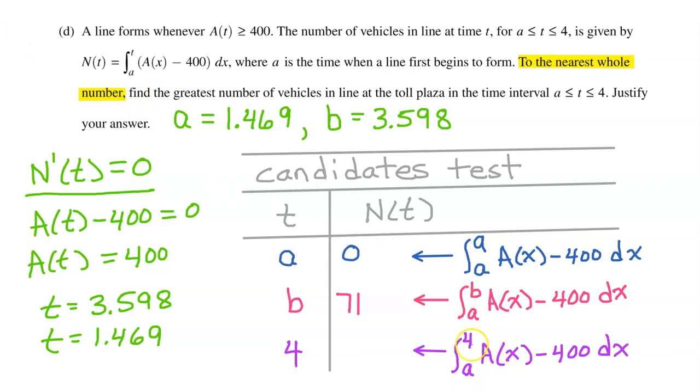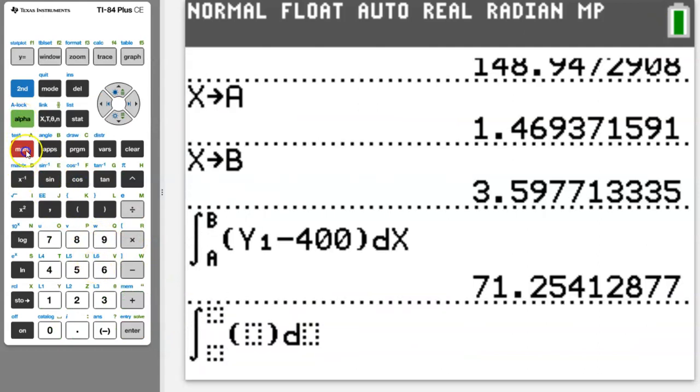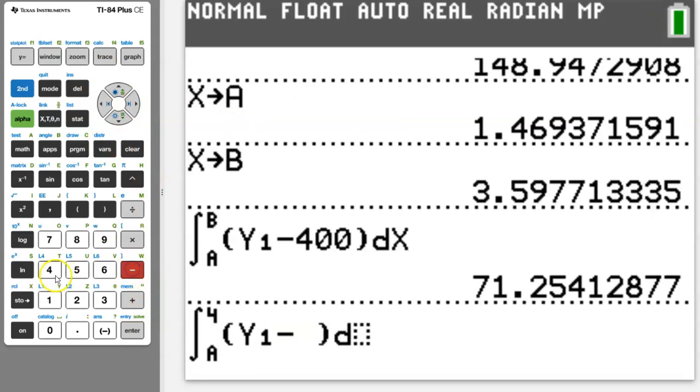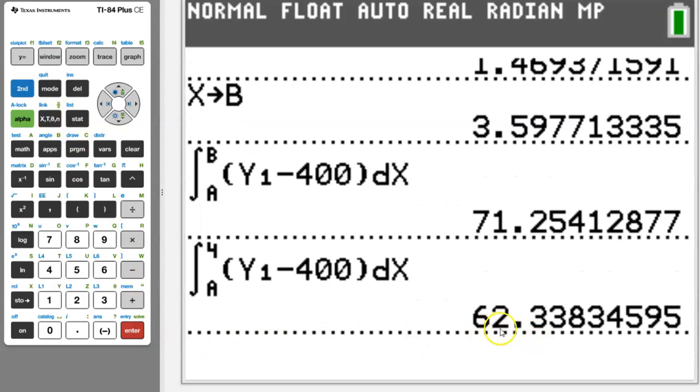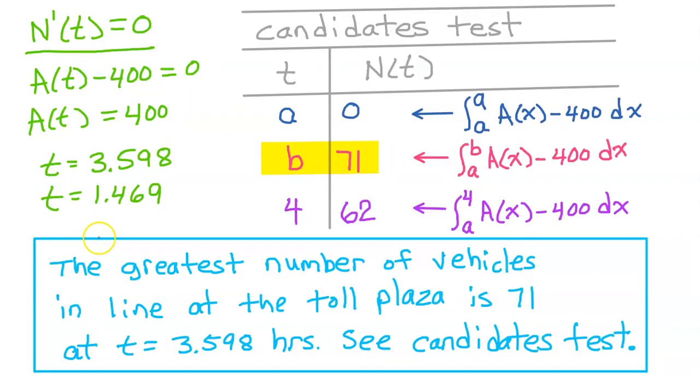Finally, we need to find the integral from A to 4 of A(X) minus 400. By the way, notice this work that I'm showing. I'm showing the setup. This is all part of my justification. So, we are integrating, so math 9, from A to 4. And one more time, vars, yvars, enter, Y1, minus 400. So, we will put 62. So, the greatest number of vehicles is 71 at time B, which is 3.598 hours. Let's write that up. The greatest number of vehicles in line at the toll plaza is 71 at T equals 3.598 hours. See Candidates Test.